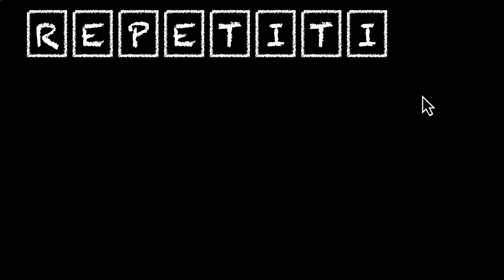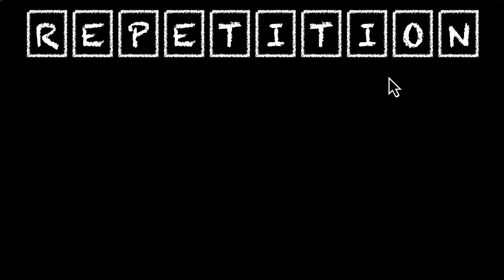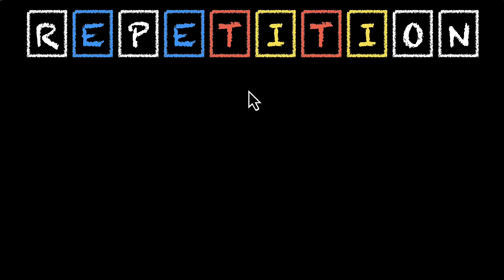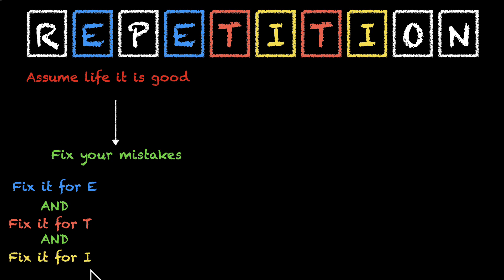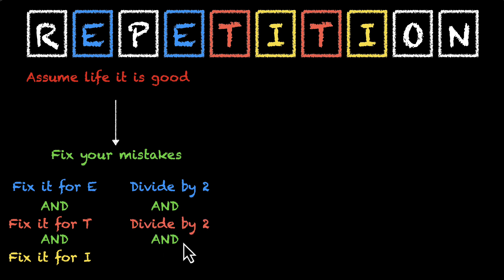Let's take one more: R-E-P-E-T-I-T-I-O-N — the word repetition itself. Let's see the repetitions: we have E and E, T and T, and I and I — multiple letters appearing more than once. Same drill: assume life is good, then fix mistakes. We're fixing for E, for T, and for I. E appears twice, so we divide by 2. T appears twice, so we further divide by 2. I also says divide by 2.